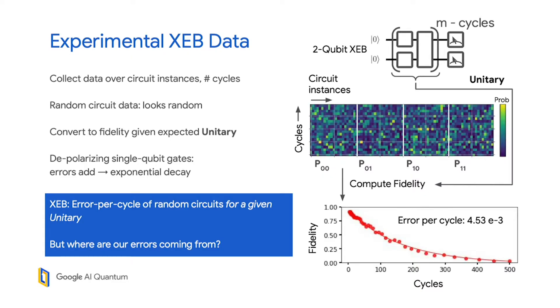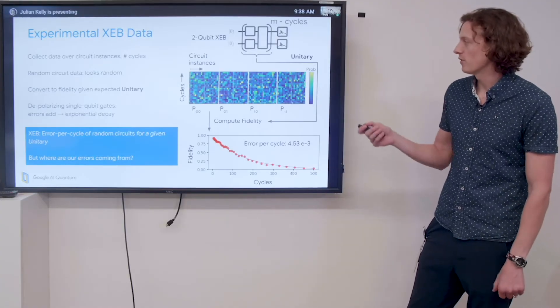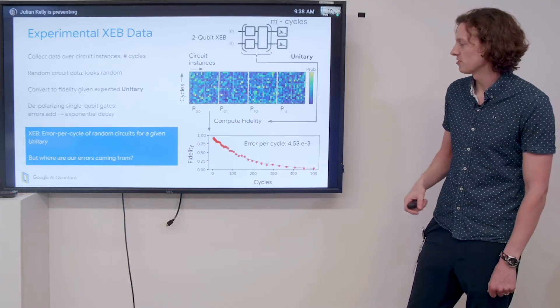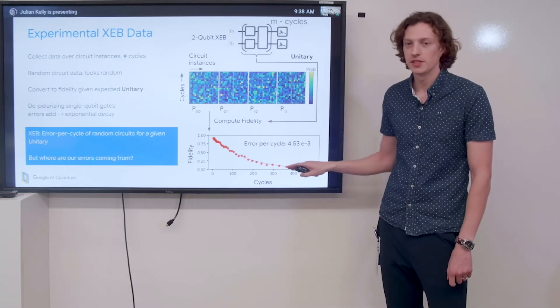Here is what experimental cross-entropy benchmarking data looks like. We take data both over a number of cycles and random circuit instances. When we look at the raw probabilities, we see that it looks pretty random. We then take the unitary that we expect to get, compute the fidelity, and out of this random looking data, we see this nice fidelity decay.